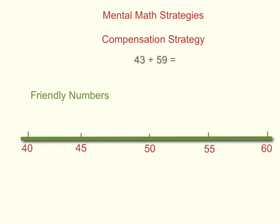If we look at the numbers from our question, we have to ask ourselves which one of these numbers is close to a friendly number. If we put 43 on the number line, we find that it is in between 40 and 45. If we put 59 on our number line, we notice that it is very close to 60. Therefore, 59 is a number that we can use to compensate because it's very close to a friendly number.